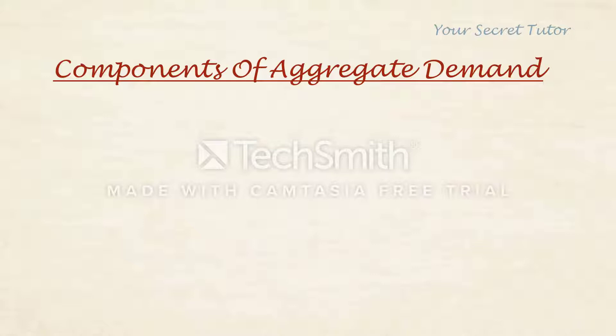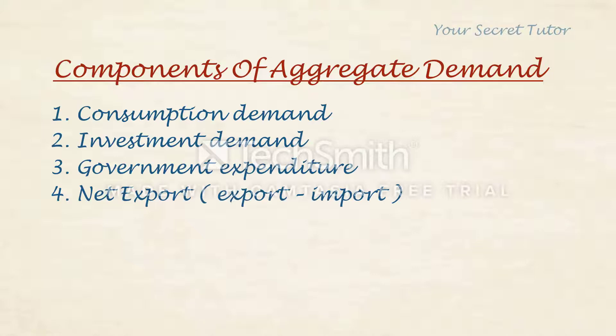In Aggregate Demand, there are 4 components. If you add these 4 components, you get Aggregate Demand. The 4 components are: first, Consumption Demand; next, Investment Demand; then Government Expenditure; and finally Net Export. So Aggregate Demand equals C plus I plus G plus X minus M.